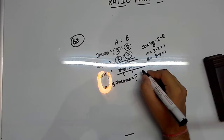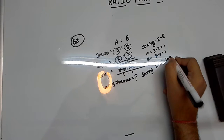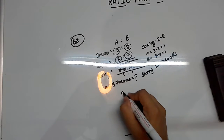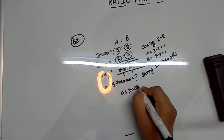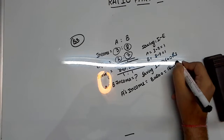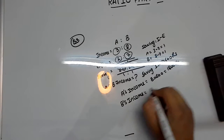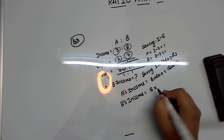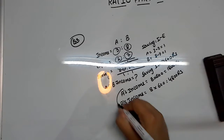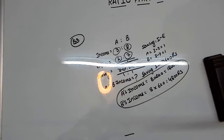The value of 1 savings ratio unit is 600 rupees. So A's income = 3 × 600 = 1800 rupees. And B's income = 8 × 600 = 4800 rupees. It is as simple as that. I am writing it out for you, but you can work it out mentally once you understand the concept.